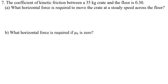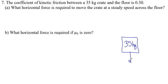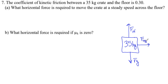So let's go ahead and draw our force diagram. That's one of the things that I will help you out with. We've got a 35-kilogram crate, which means we have a force of gravity down here. We have an equal and opposite normal force. We have an applied force and we have a force of friction.